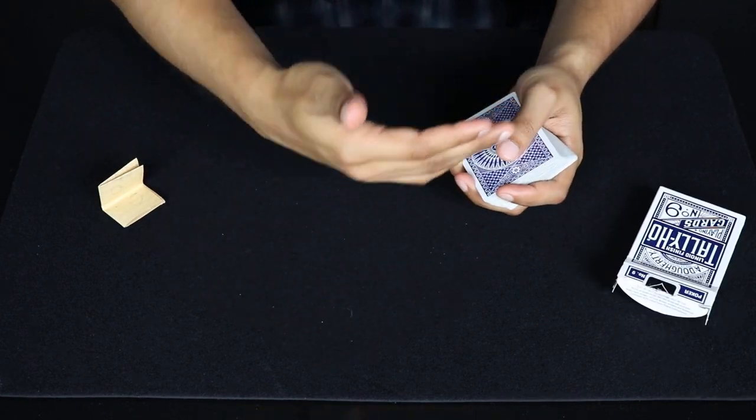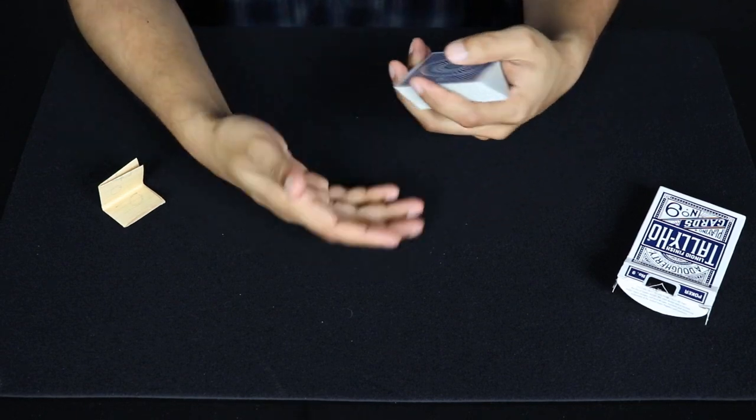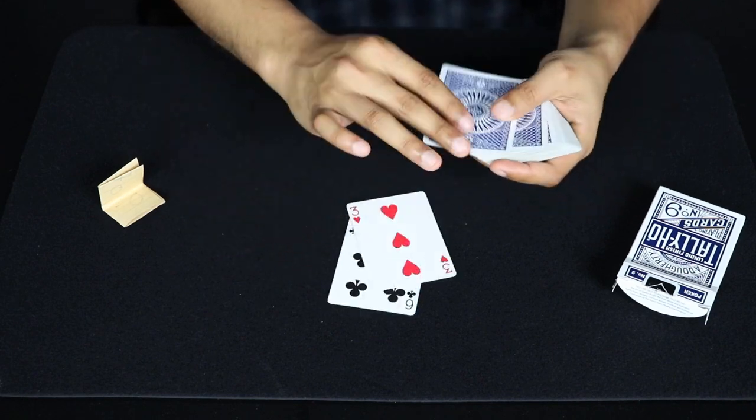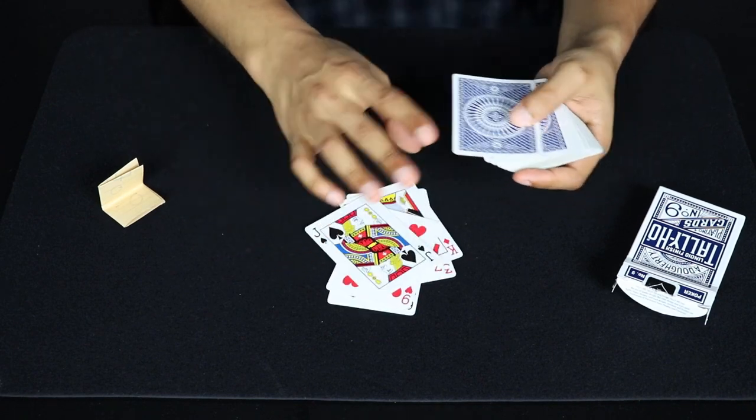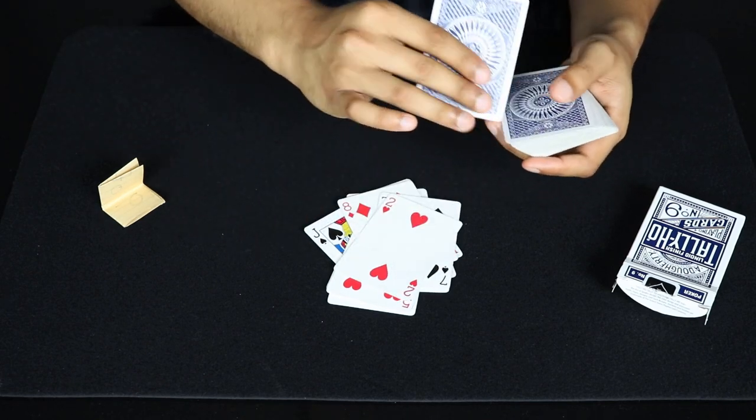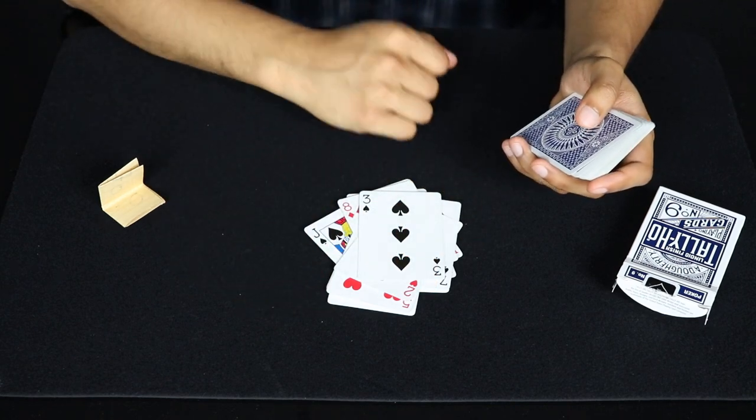So getting into actually performing, you're just going to start dealing cards about one at a time and you're just going to ask the spectator to tell you when to stop. So let's say you just keep on dealing, keep on dealing and the spectator says stop here.